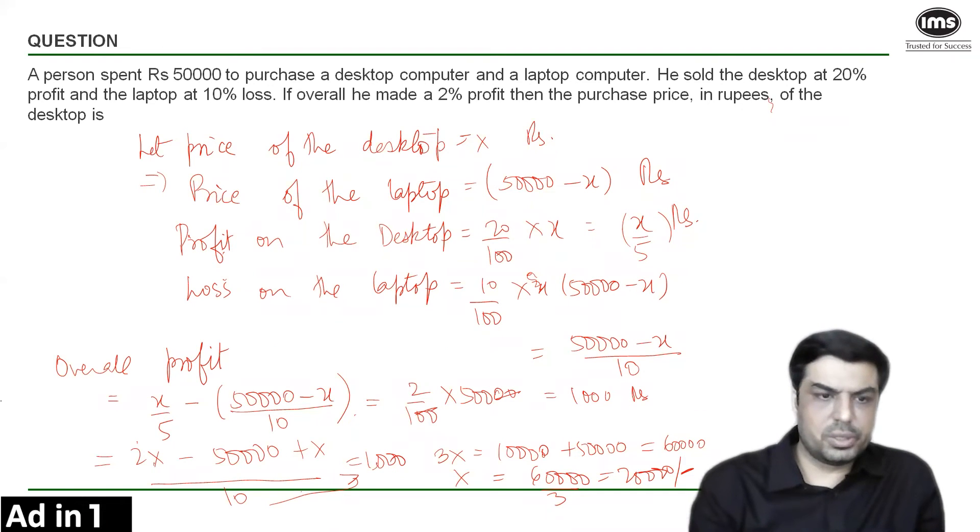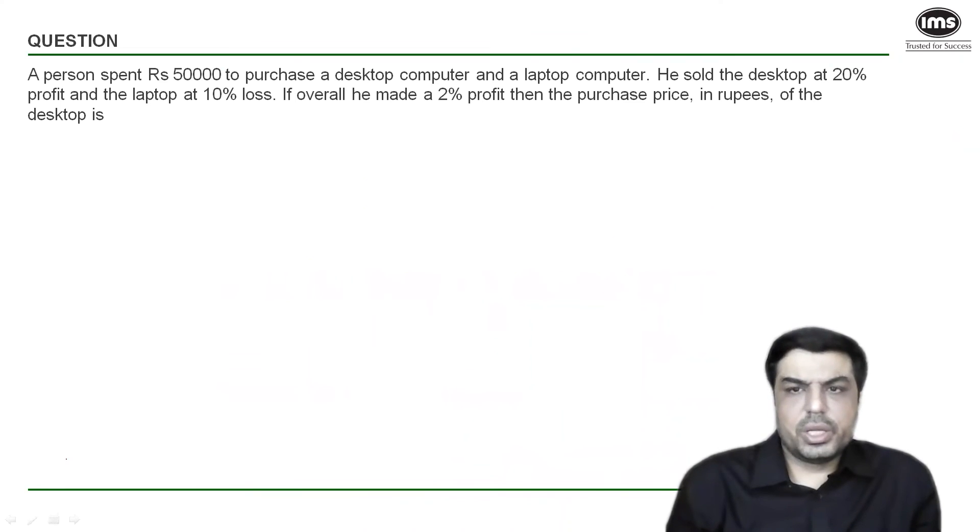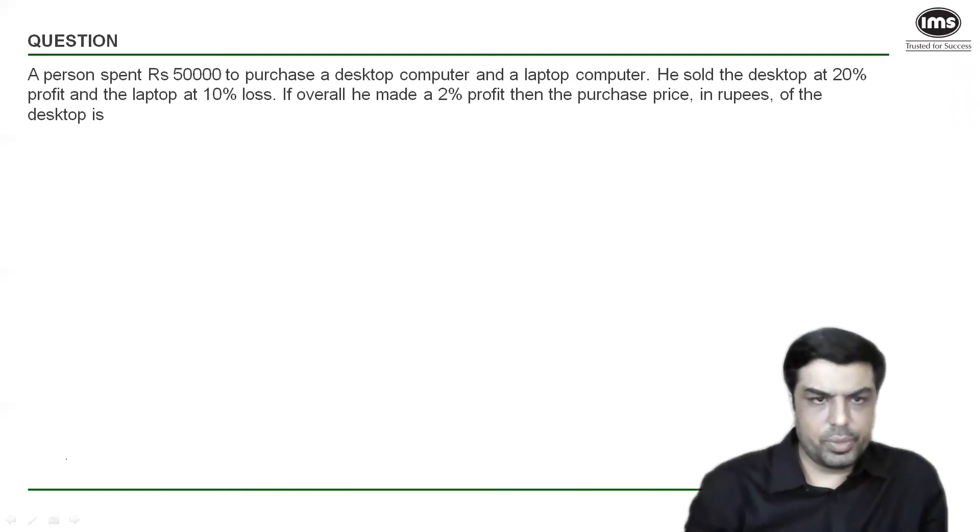If you see, the profit percentage on desktop is given, the loss percentage on laptop is also given, and the overall profit percentage is also given, which means all the three item values are known to us. Which means we could have also done this question by allegation.